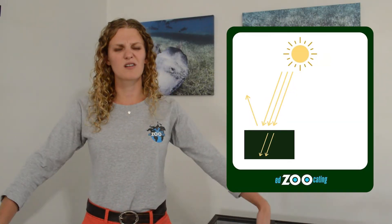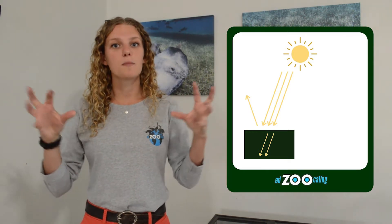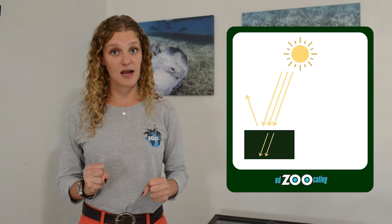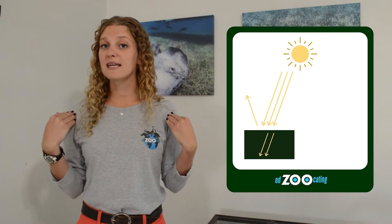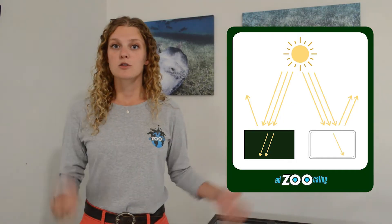A lot of these plants have dark-colored leaves. If you've ever been outside wearing a dark shirt, you might notice it gets really hot when the sun shines on it — dark colors absorb sunlight. Whereas a white t-shirt lets the sun bounce off and keeps you cooler. So in a very cold ecosystem, having dark leaves helps plants absorb sunlight and stay warm.